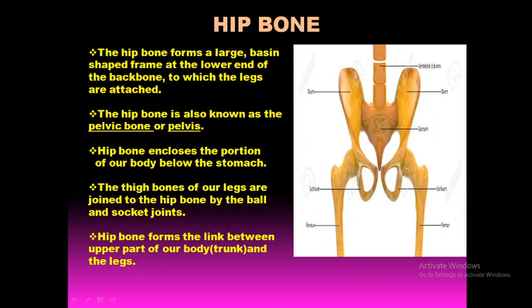The hip bone forms a large basin-shaped frame at the lower end of the backbone, to which the legs are attached. From the picture you can understand it is a large basin-shaped structure formed at the lower end of the backbone — where the backbone ends and the upper body connects to the legs. It is also known as the pelvic bone, or pelvis.